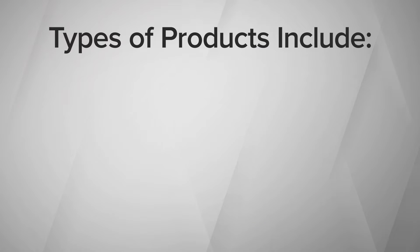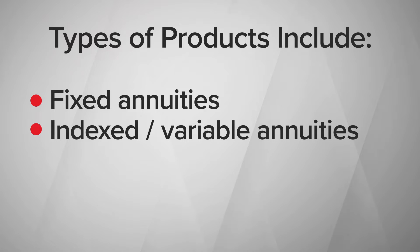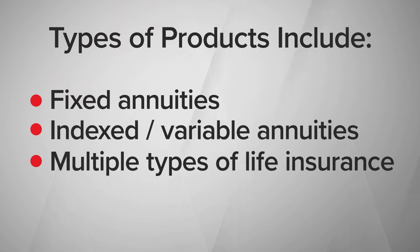The types of products you'll find in an asset intensive transaction can vary quite a bit — anything from fixed annuities to indexed annuities, and multiple types of life insurance as well.